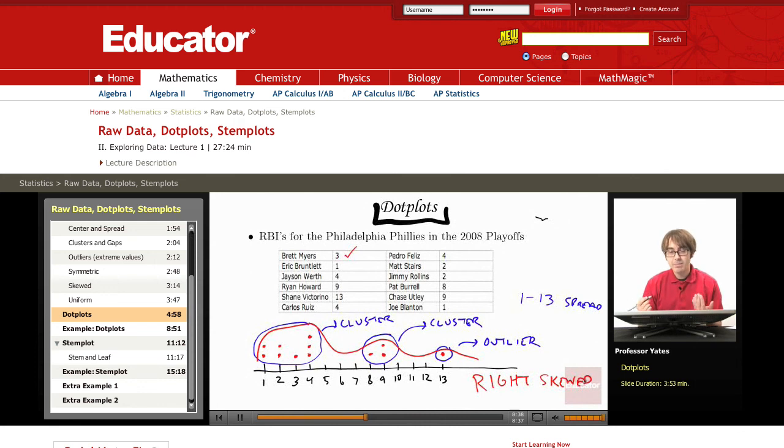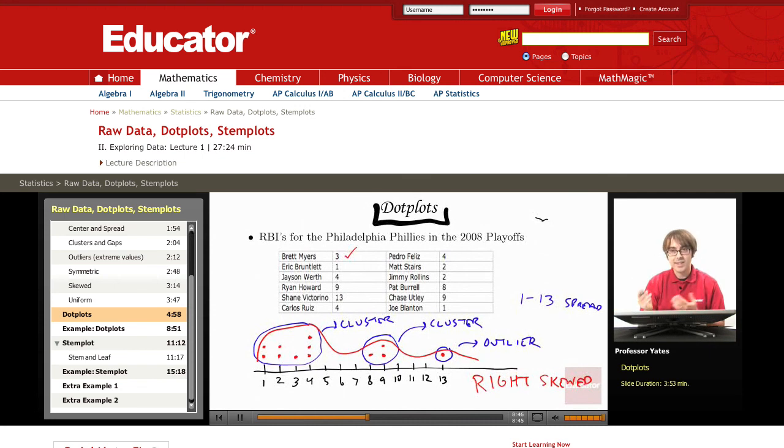So in general, this is going to be the game that we're playing as we're working through these observations, that we want to try and identify these key features of the graph after we make our dot plot.